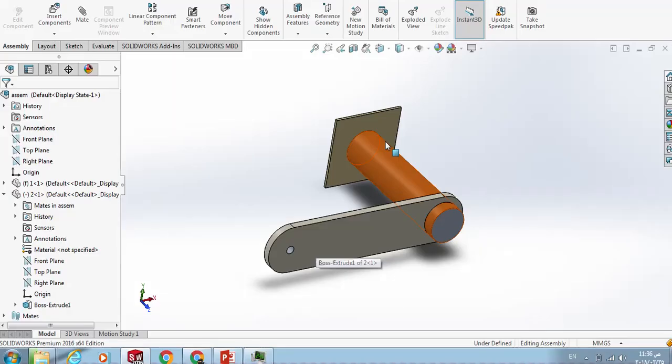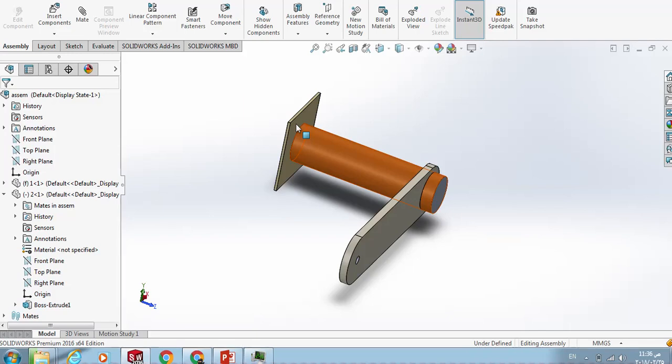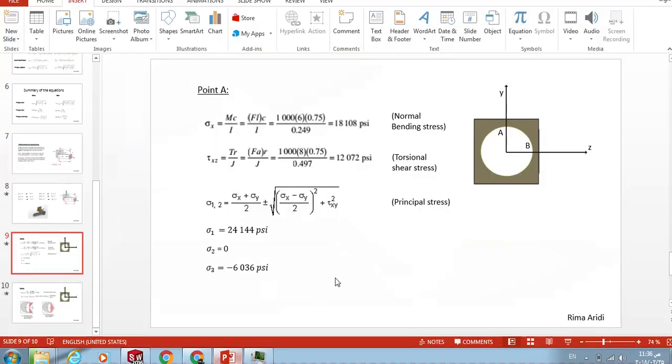The common mistake that students usually misunderstand is the position we are looking from while doing the sign convention. Here, I drew this assembly on SOLIDWORKS to make it clear for you. Here is the rod and the arm. Here are points A and B. While doing the sign convention, we don't have to look from this side. We have to flip it to the other side and look at it from this position, where A is here and B on this point. This is point A, and this is point B.